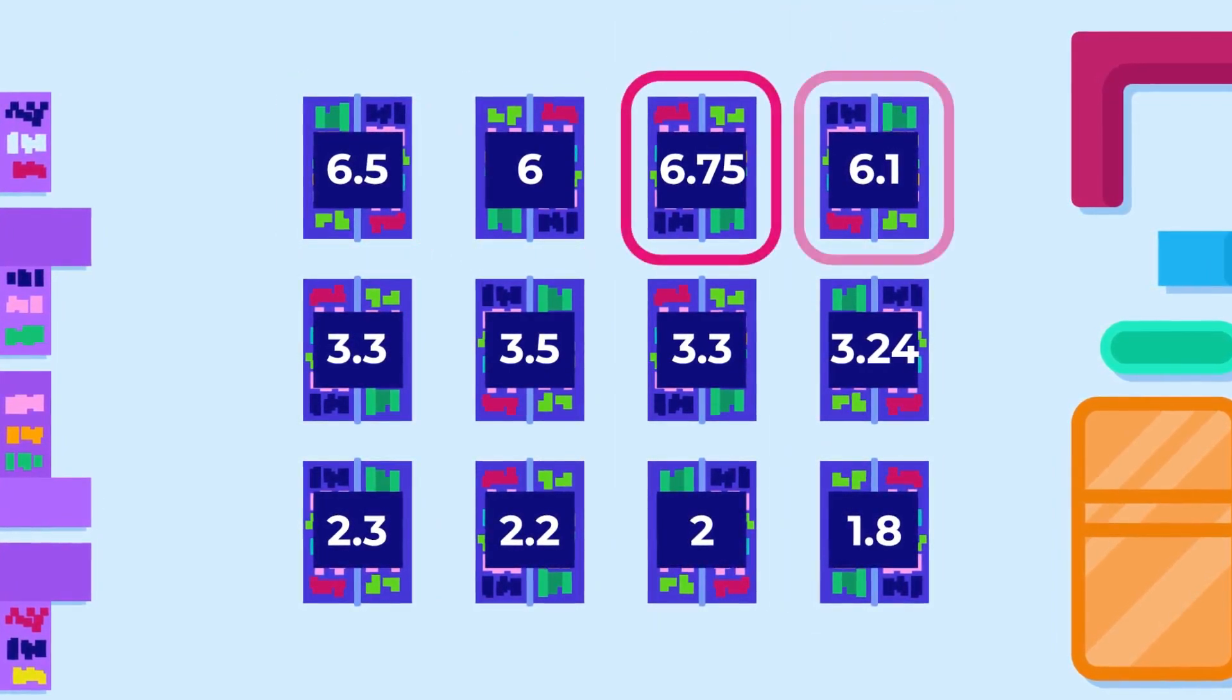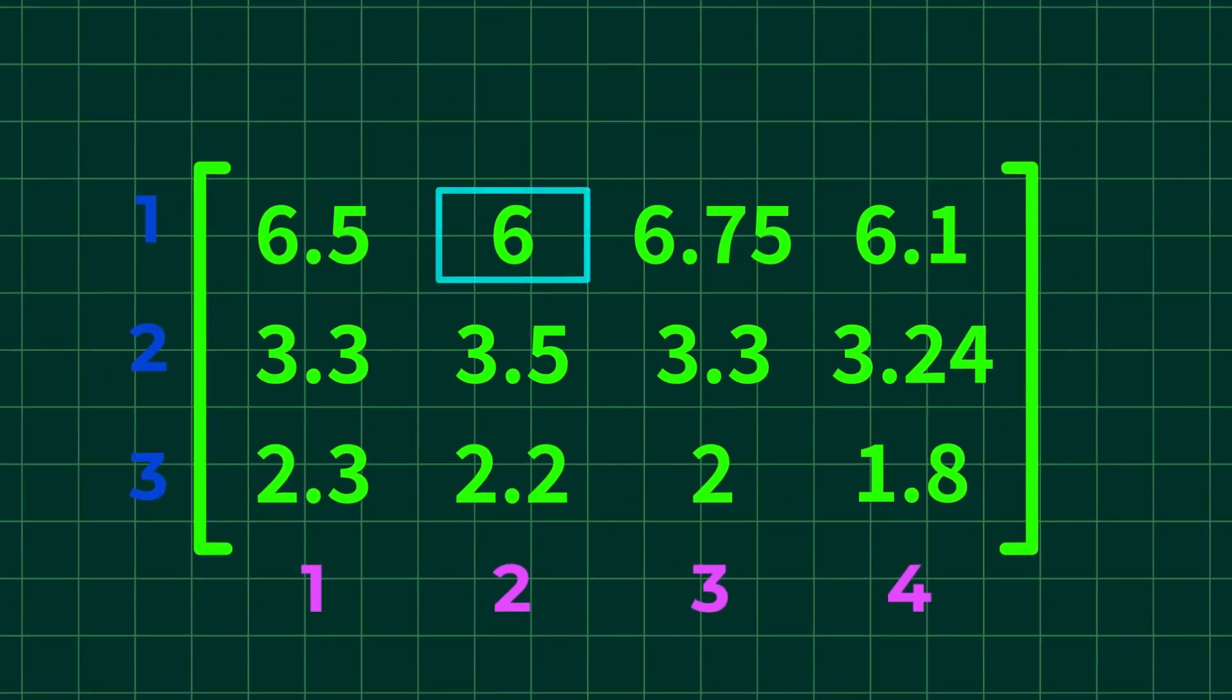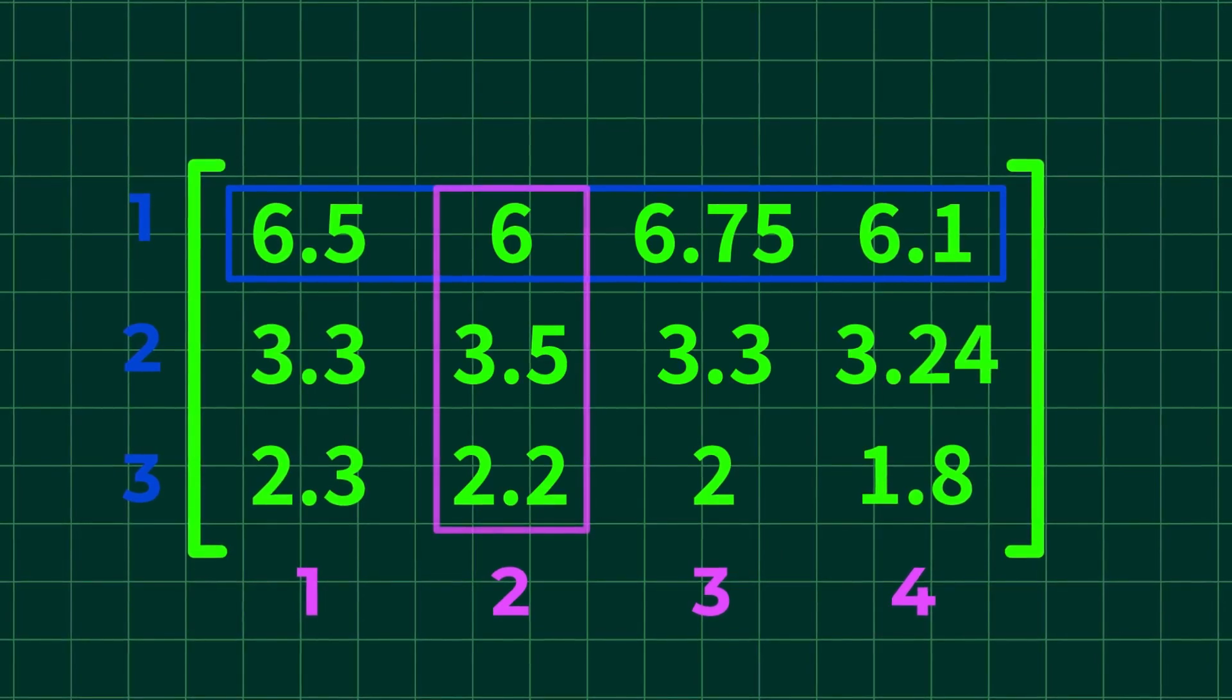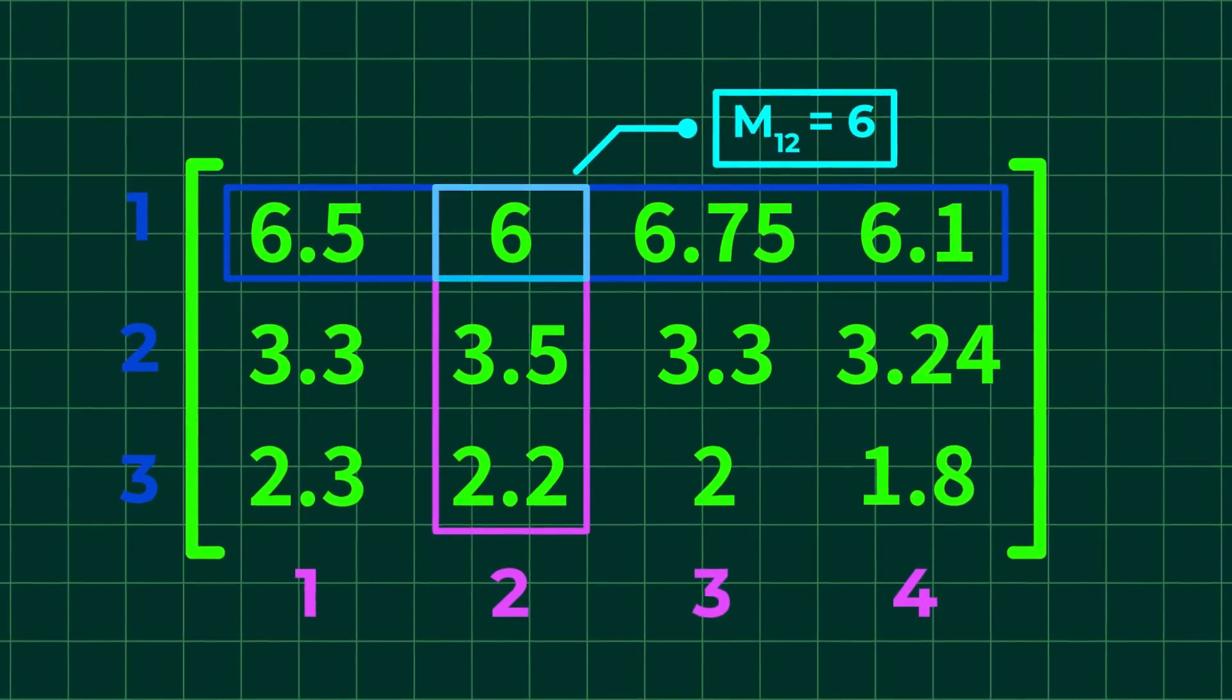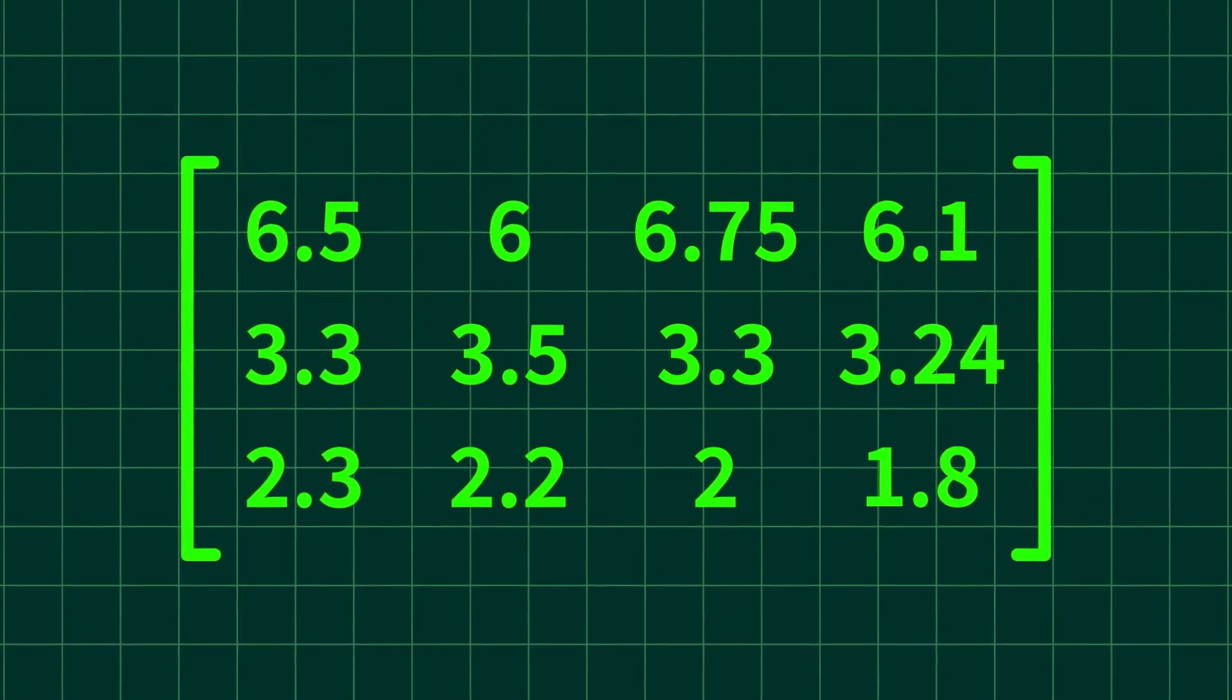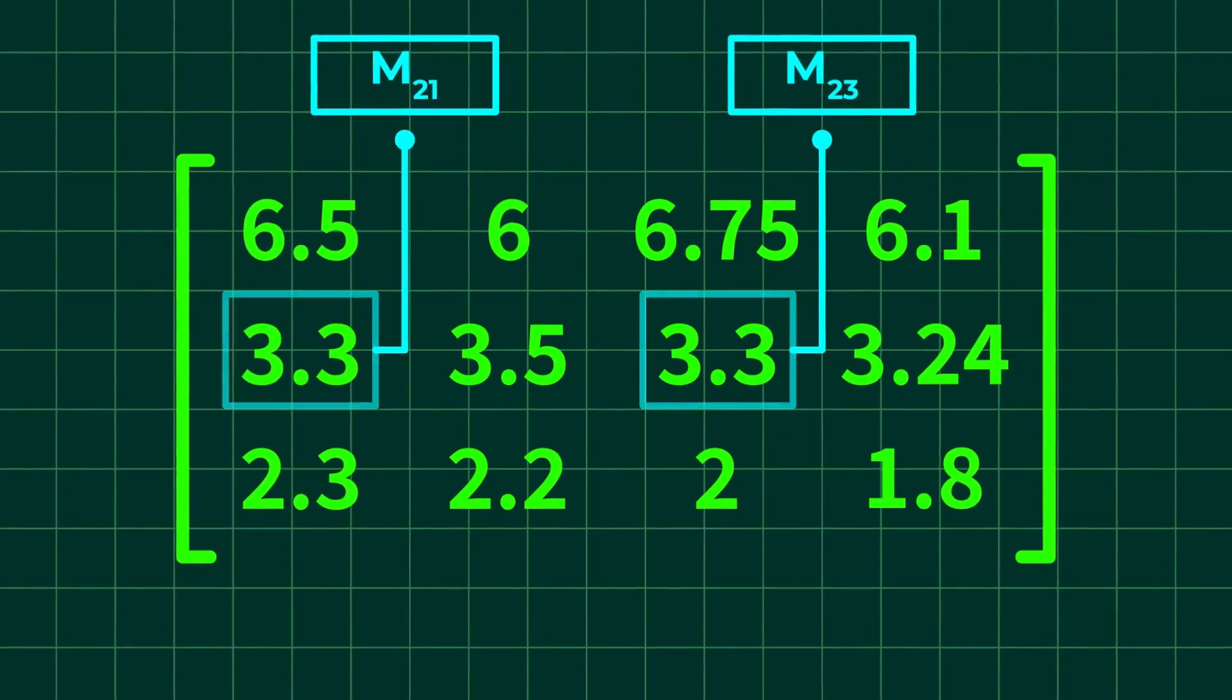We can identify the position of an element based on these. For example, element 6 in Matrix M is on the first row, R1, and second column, C2, simply stated as M12 equals 6. Hence, we can easily distinguish the elements with the same value, but in different positions, such as 3.3 in the matrix, M21 and M23.